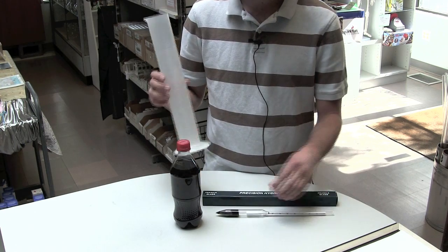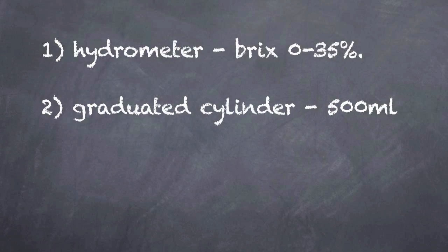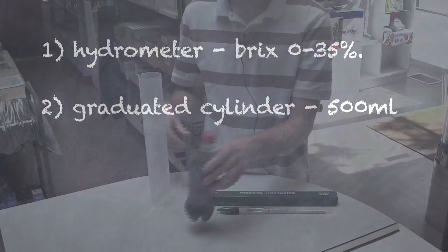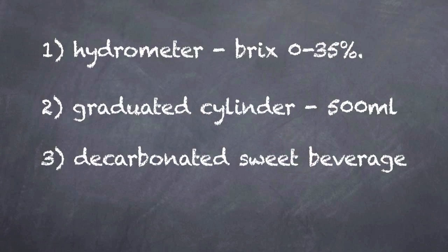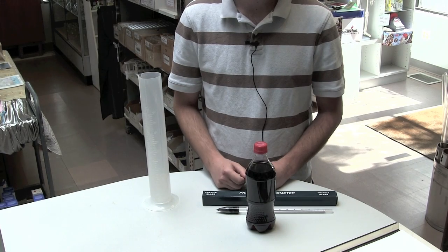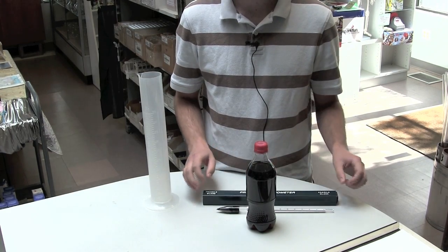Next you'll need a graduated cylinder about 500 milliliters big and finally you'll need a decarbonated sweet beverage. You want to let the carbonation out of your beverage before you do this because it might disrupt the accurate measurement of the hydrometer.